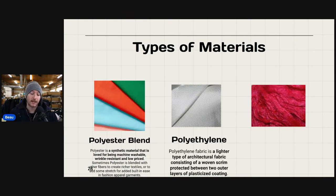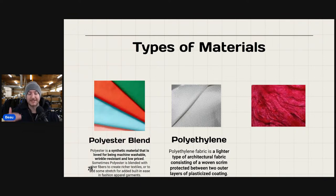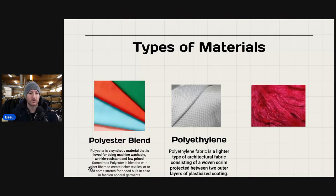Polyethylene fabric is a lighter type of architectural fabric consisting of a woven scrim protected between two outer layers of plasticized coating. A lot of these fibers are synthesized and chemically produced, so they're probably not as desirable as cashmere, silk, or wool. I'm not out actively searching for polyethylene — but it's good to be familiar so that when you do your listings, you know what to put in the item specifics.